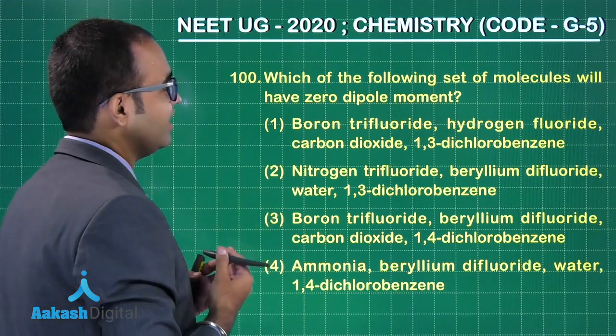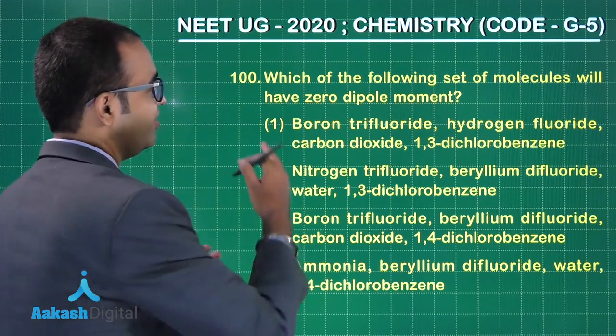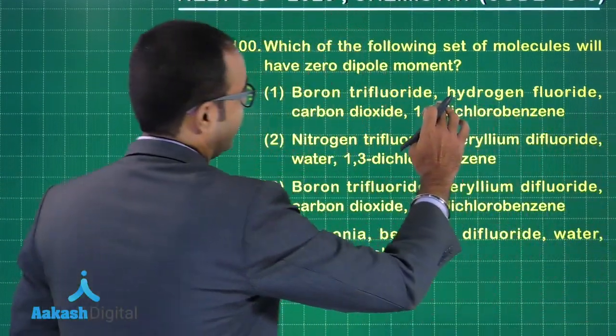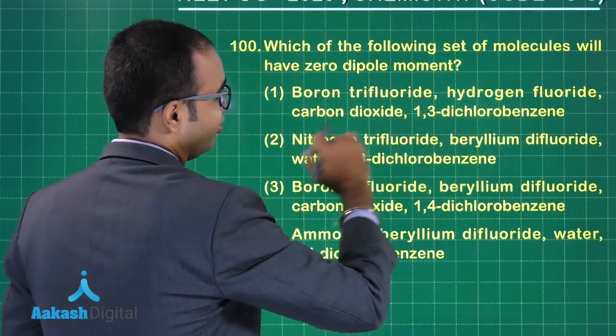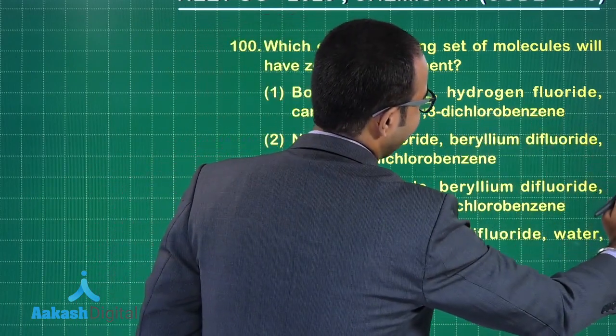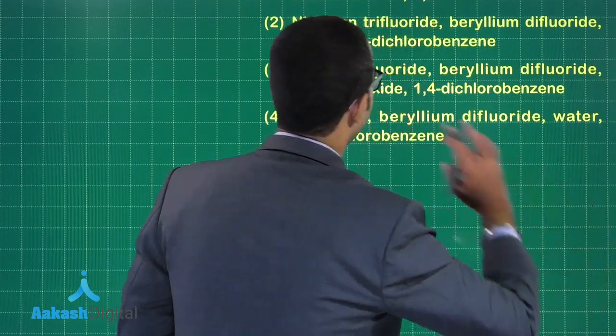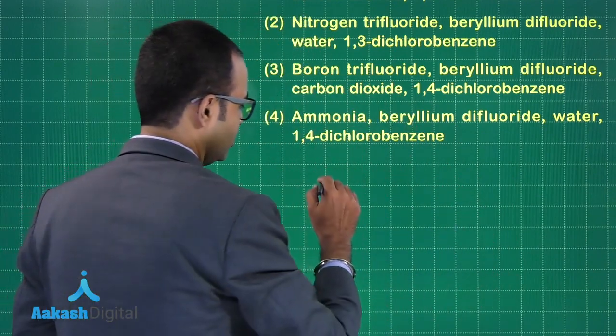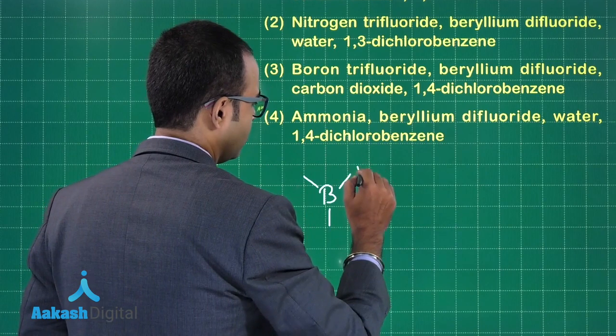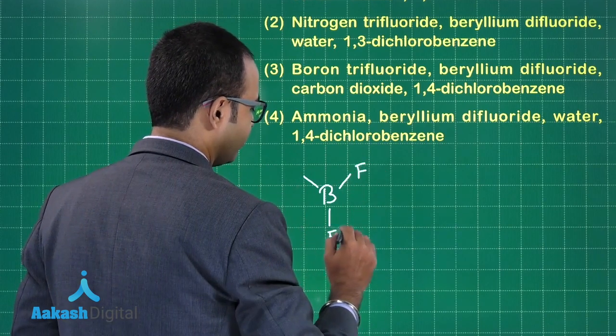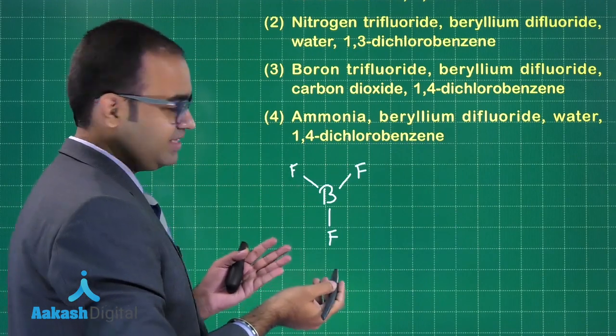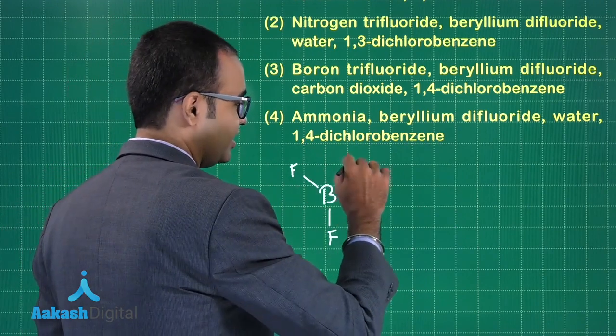Let us look at the molecules that we have: boron trifluoride, hydrogen fluoride, carbon dioxide, and 1,3-dichlorobenzene. Let us draw the structures of all four molecules. We have boron trifluoride. Will this have a zero dipole moment? Yes, because it is connected to the same atoms and no lone pairs. There are no lone pairs over here.